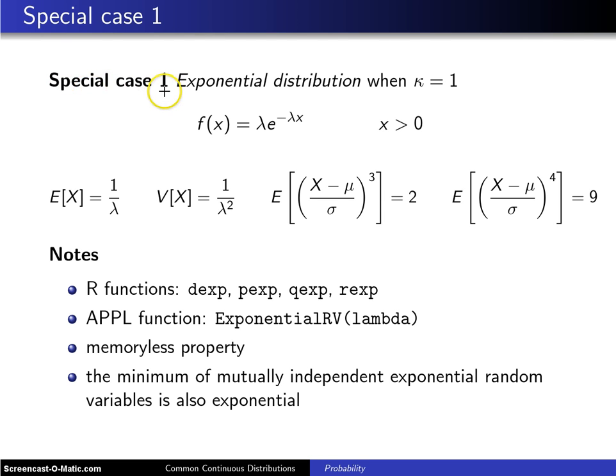The first special case of the gamma distribution is when kappa is equal to 1. When the shape parameter is equal to 1, the gamma distribution collapses to the exponential distribution, and the probability density function becomes just lambda e to the minus lambda x.